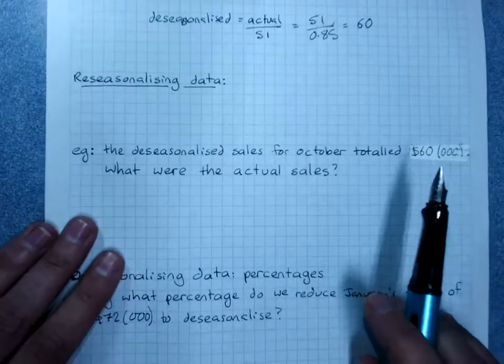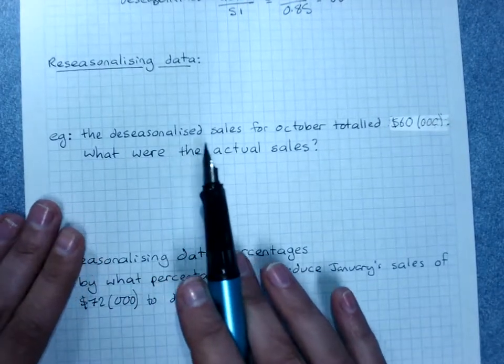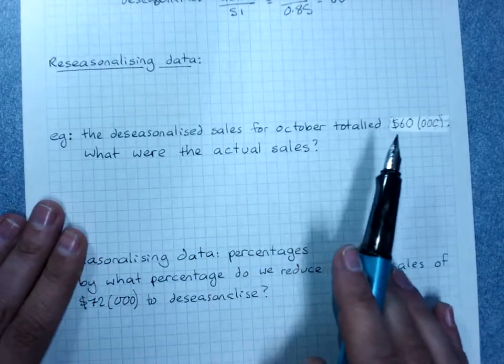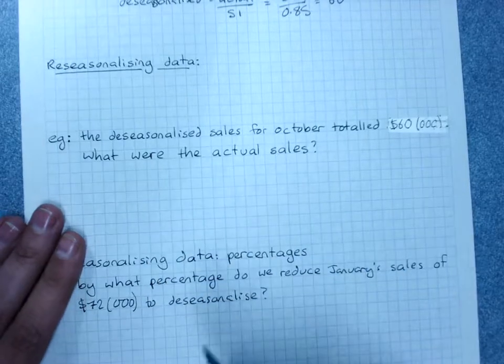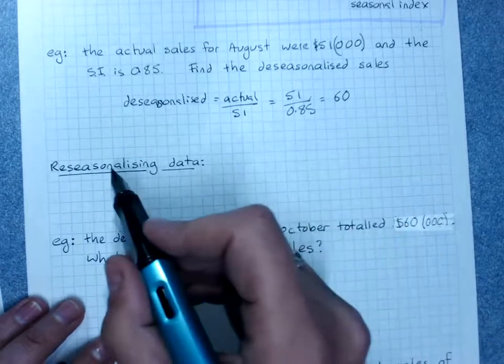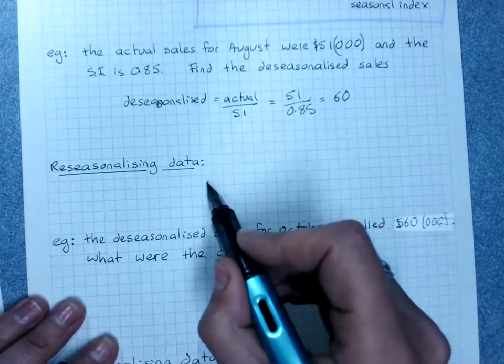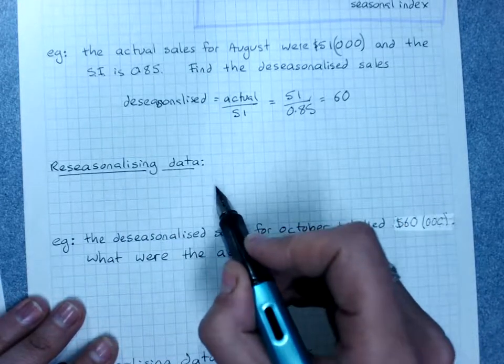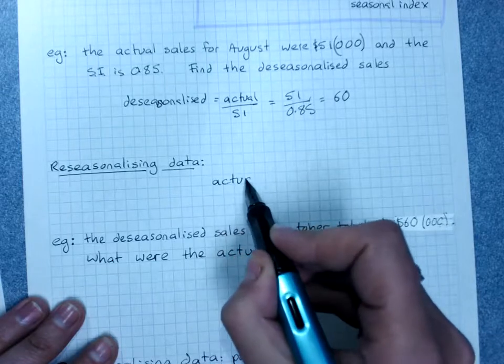Re-seasonalizing data: the de-seasonalized sales for October totaled 60,000. What were the actual sales?